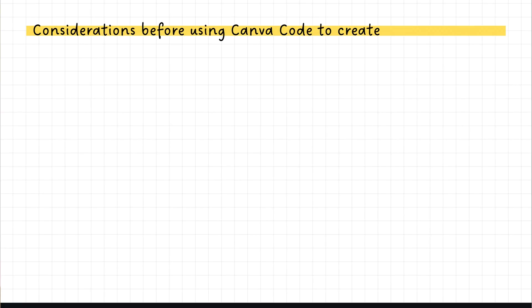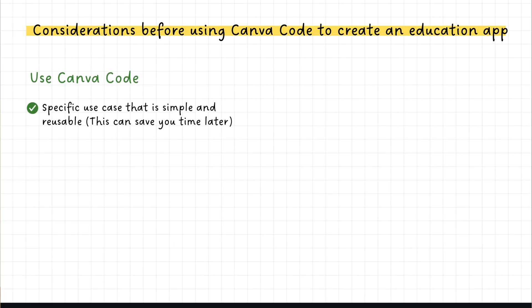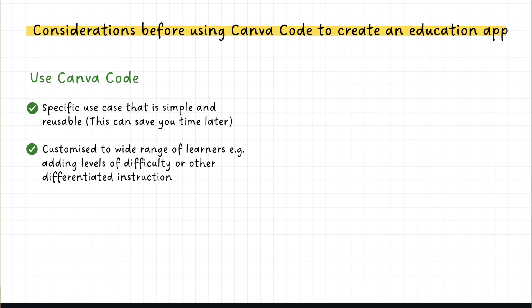I think this is going to be less labour intensive and much more reusable in the future. So now let's break down things to consider before using Canva Code. It takes time to ideate, prompt, and design the app that you want. Let's look at why you might want to use Canva Code. If you have a specific use case in mind and it's simple and reusable, then this could be an opportunity to save you time in the future. Closely related is if you have customisations you want in your app.